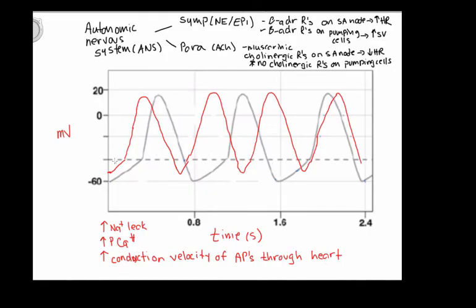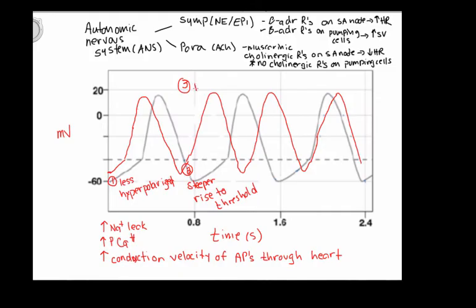So when looking for the differences with sympathetic stimulation: one is less hyperpolarized, two is a steeper rise to threshold — both of these effects are because of increased permeability to positive ions — and the third thing is more beats per minute. That is the effect of sympathetic stimulation.